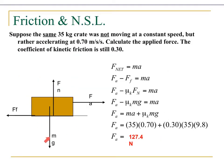We show a diagram with normal force, mass due to gravity, force of friction, and applied force. Now using Newton's second law: suppose the same 35 kilogram crate is accelerating at 0.70 meters per second squared. Calculate the applied force given that the coefficient of kinetic friction is still 0.30.